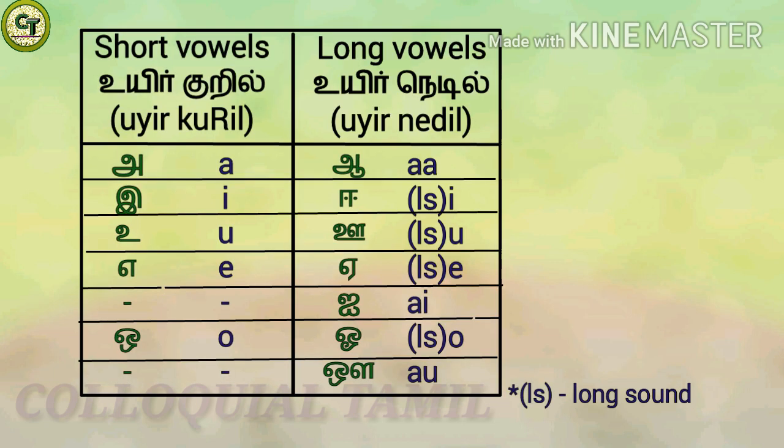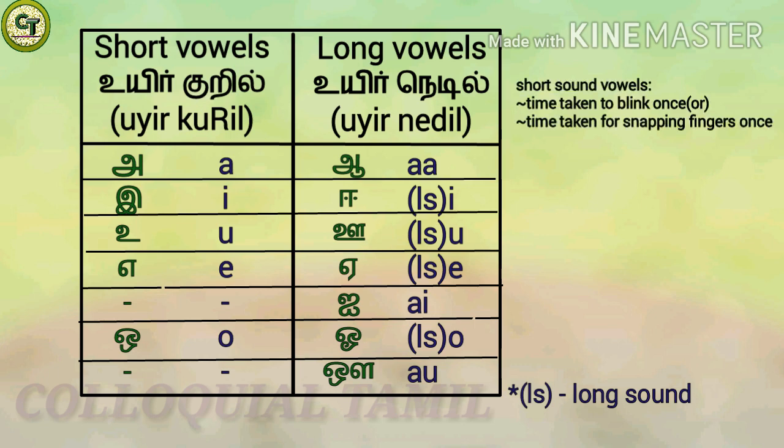Vowels are classified into short sound vowels and long sound vowels. In Tamil, short sound vowels are called 'weir kuril'. There are five short sound vowels: a, e, u, a, o. The time taken to pronounce a short sound vowel is the same as the time taken to blink once or the time taken for snapping fingers once.